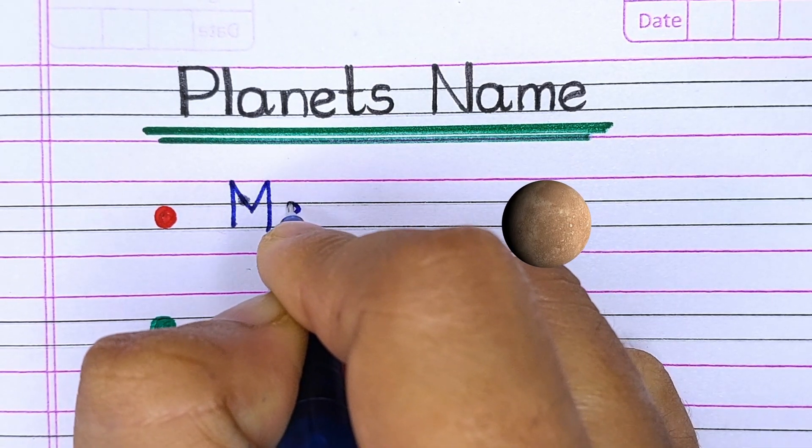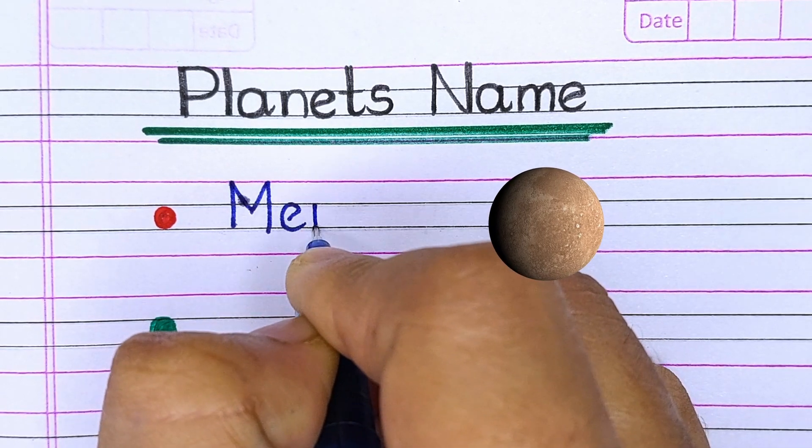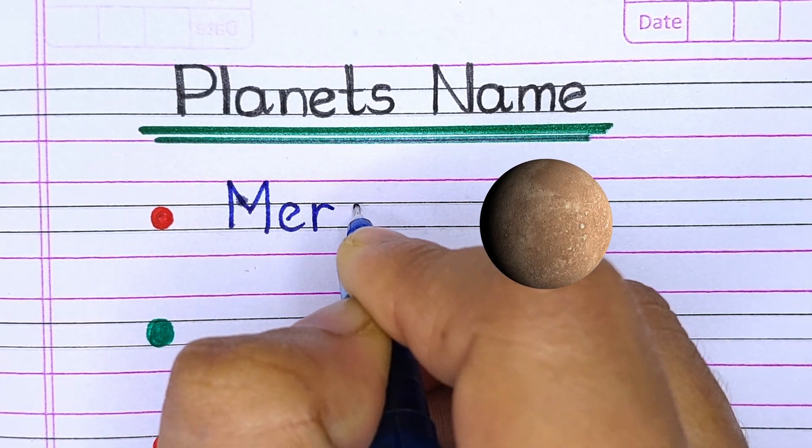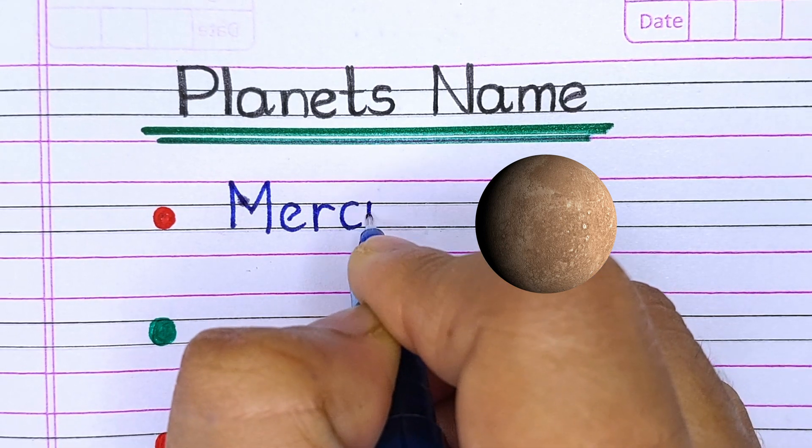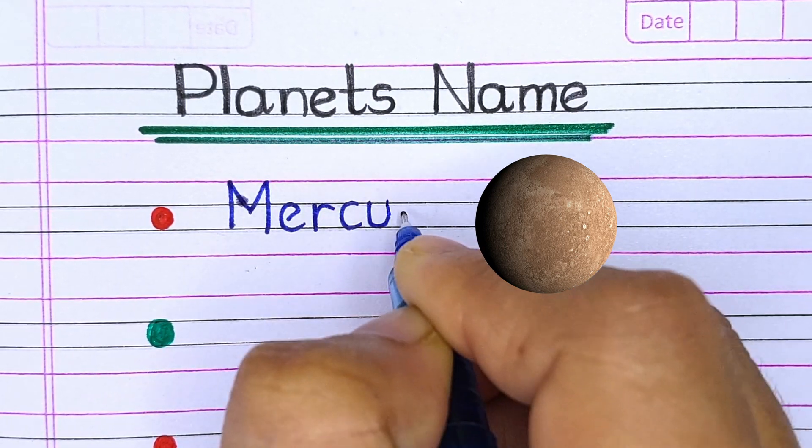There are a total of 8 planets in our solar system. In this video, we will learn their names one by one.